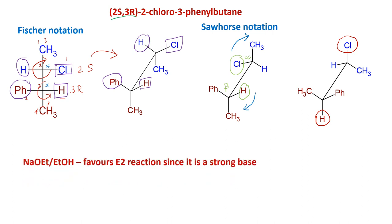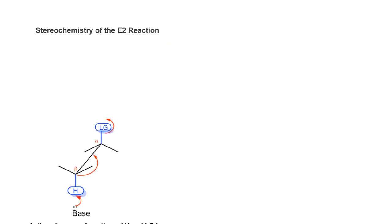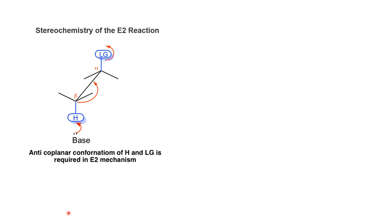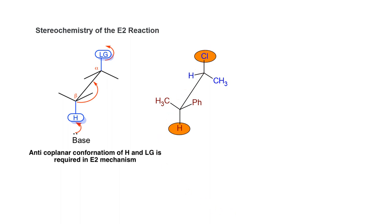This is the first and foremost step for carrying out this reaction to find the desired product. Sodium ethoxide in ethanol is a strong base, indicating an E2 reaction. In E2, the elimination is anti-coplanar — the groups leaving must be in anti-positions in a staggered conformer. In this Sawhorse notation, H and Cl are anti to each other. The base abstracts the proton, the electrons shift to form a double bond, and the halogen leaves, giving an alkene.